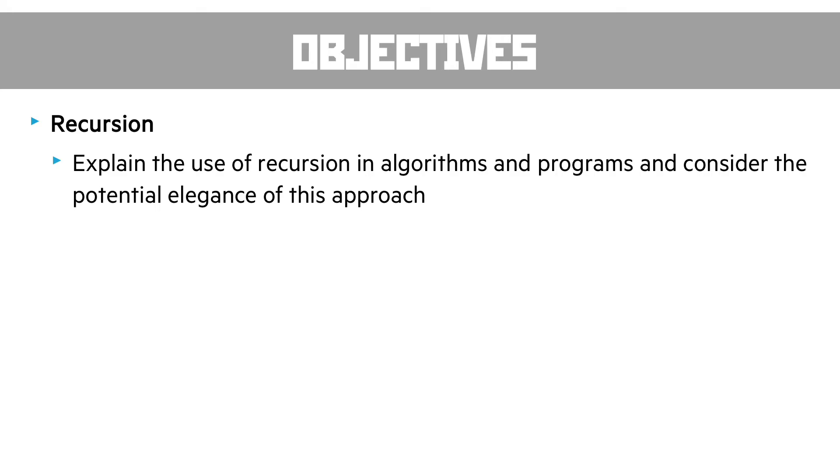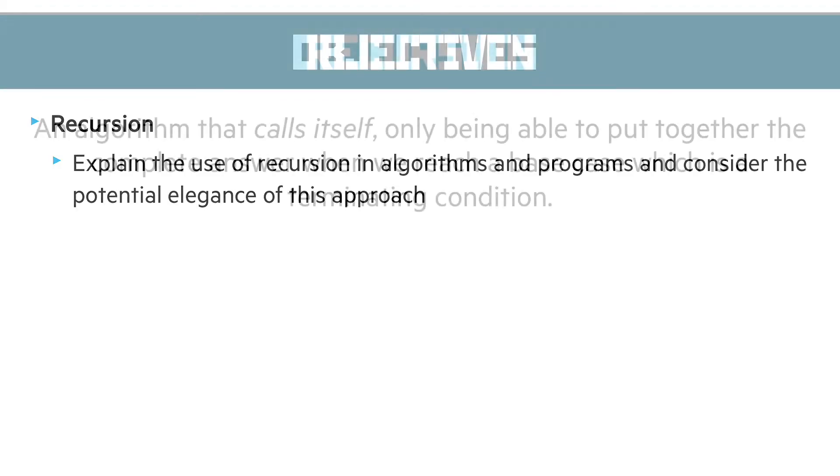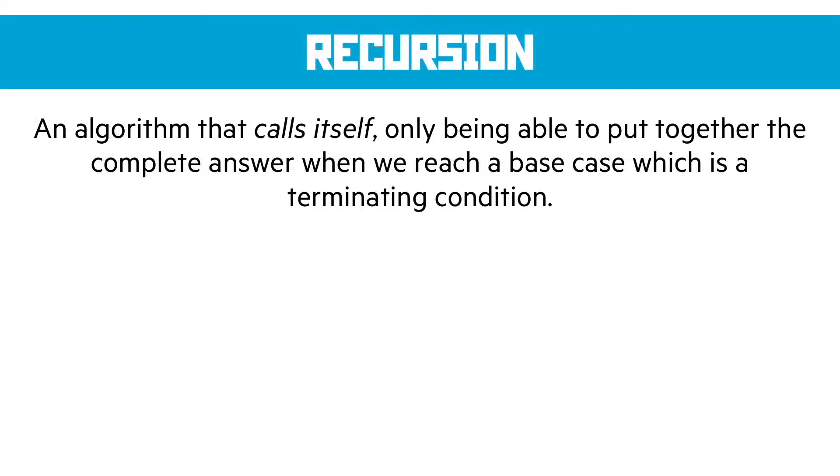The next objective is about recursion. Recursion is one of the most beautiful concepts in computer science. We need to explain the use of recursion in algorithms and programs and consider the potential elegance of this approach. An algorithm that calls itself in its definition is a recursive function. We can only put together the complete answer when we reach a base case or a terminating condition, so when the answer actually outputs a value that can be returned back up the stack.